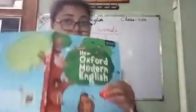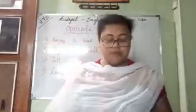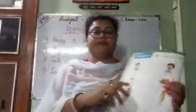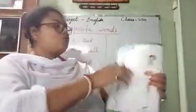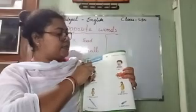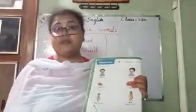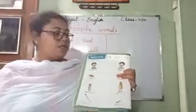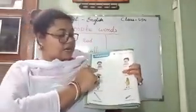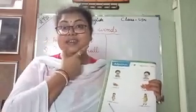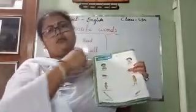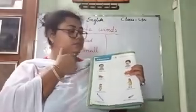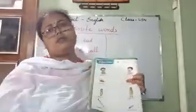Check out your Oxford book, page number twenty-eight. See here, page number twenty-eight. What is written? A-D-J-E-C-T-I-V-E-S. Adjectives. Adjective means opposite words. See the face — a happy man, a sad man. And a happy man. A sad man.